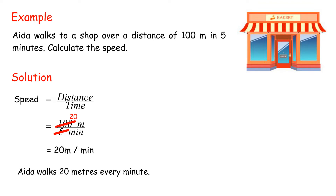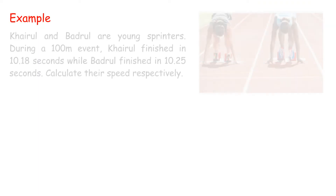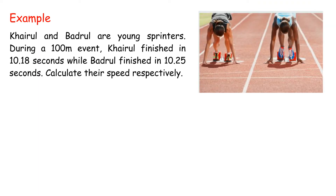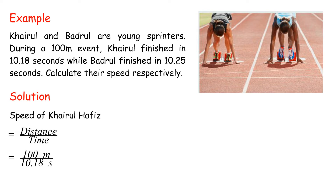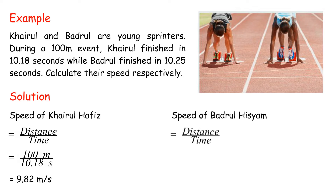Aida walks 20 meters every minute. Chirul and Badril are young sprinters. During a 100 meters event, Chirul finished in 10.18 seconds, while Badril finished in 10.25 seconds. Calculate their speed respectively. Speed of Chirul equals 100 meters over 10.18 seconds, equals 9.82 meters per second. Speed of Badril equals 100 meters over 10.25 seconds, equals 9.76 meters per second.